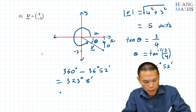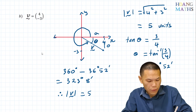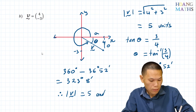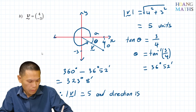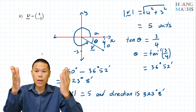So therefore the magnitude of V is equal to 5 units, and the direction is 323 degrees and 8 minutes.